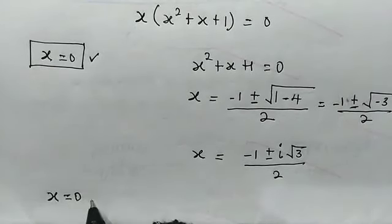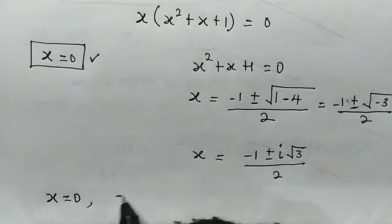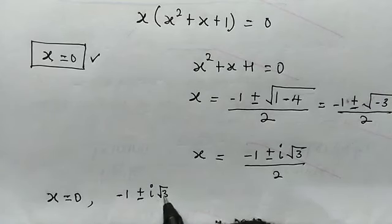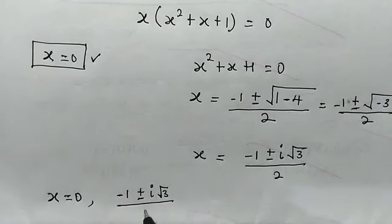So we have x is equal to 0, and x is also equal to negative 1, plus or minus, iota root of 3, divided by 2.